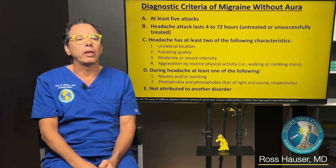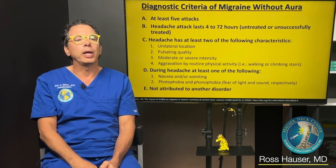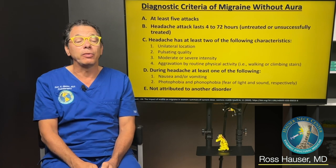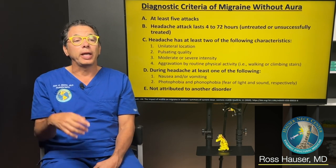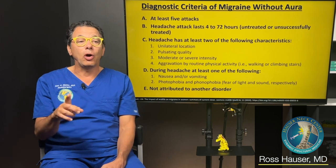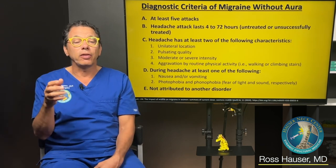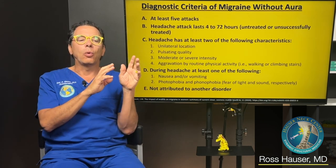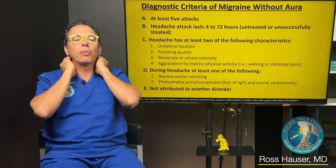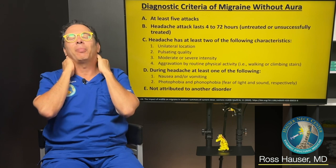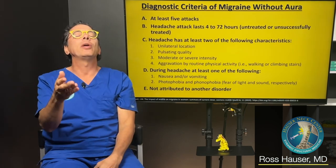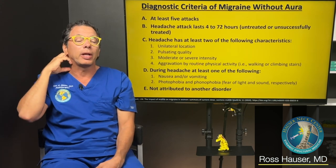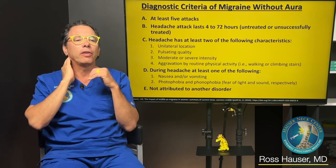During a headache, at least one of the following must be present: nausea, vomiting, photophobia, or phonophobia. Light and sound sensitivity is a common symptom we see with cervical instability. Another way somebody might know their migraine is related to the neck is that either right before the headache or during it, the person suffers with muscle tension in the neck. The muscles are tense because they're trying to stabilize the neck due to ligamentous instability.